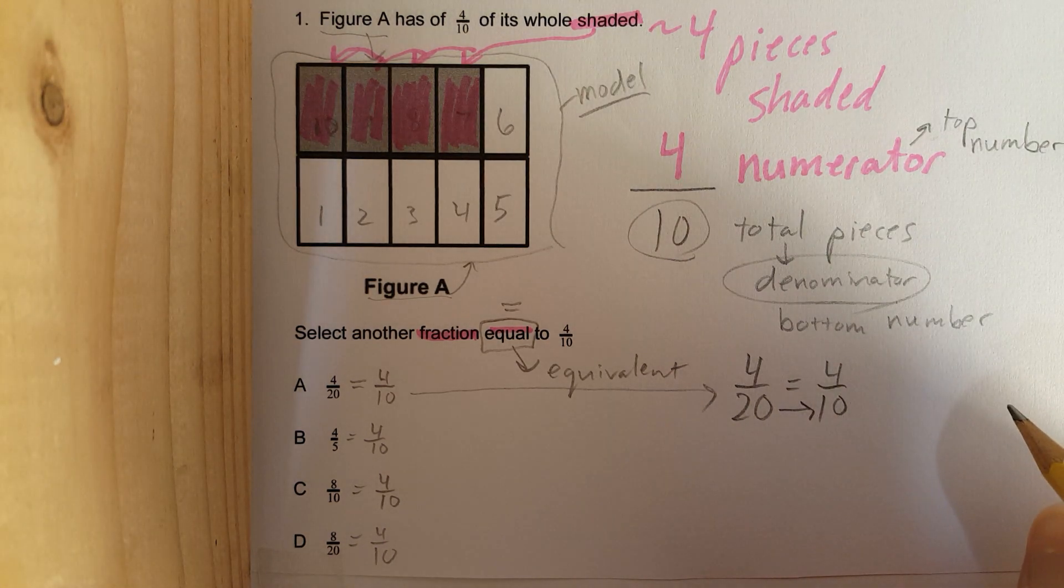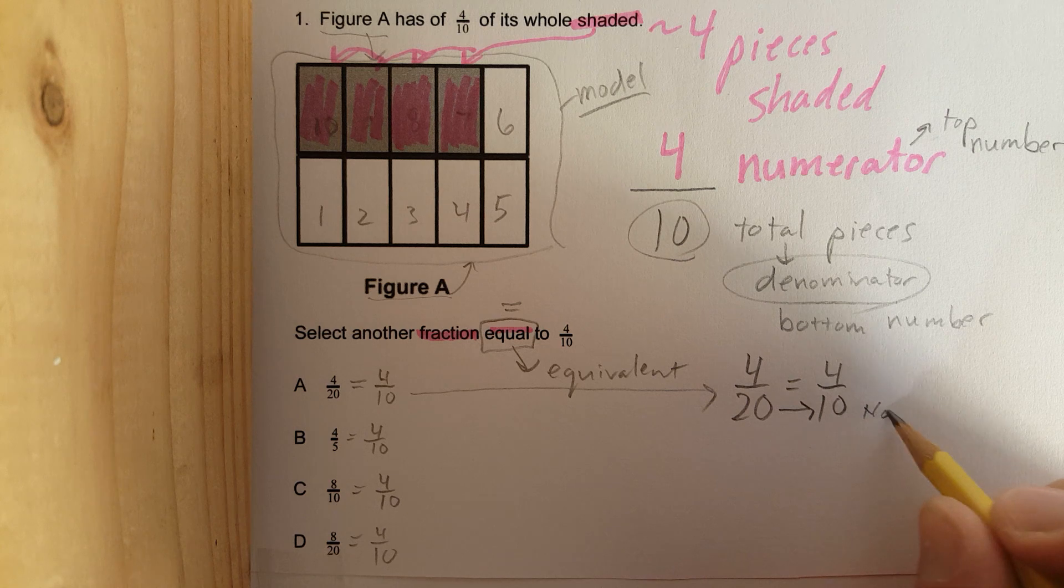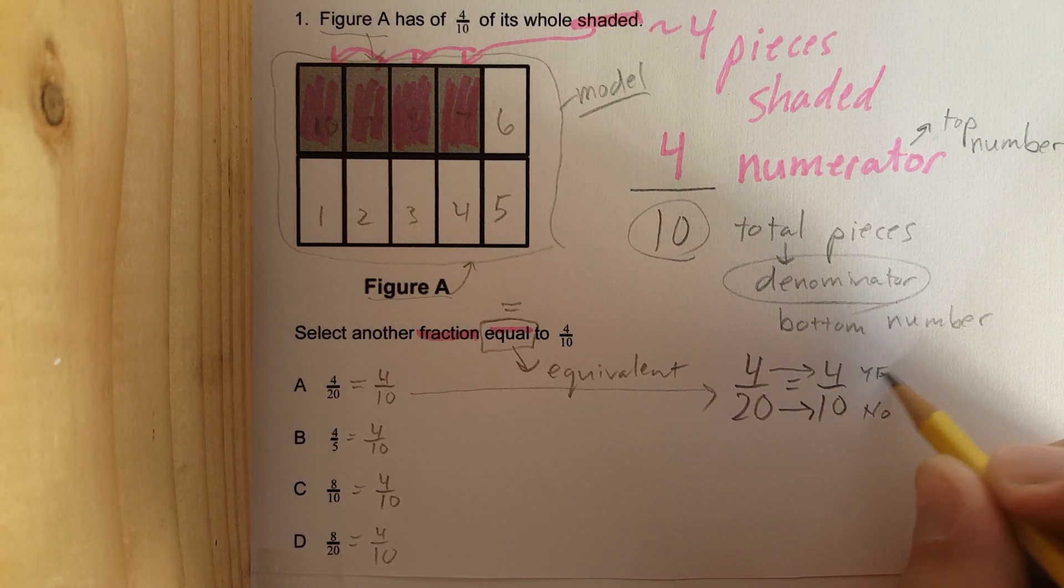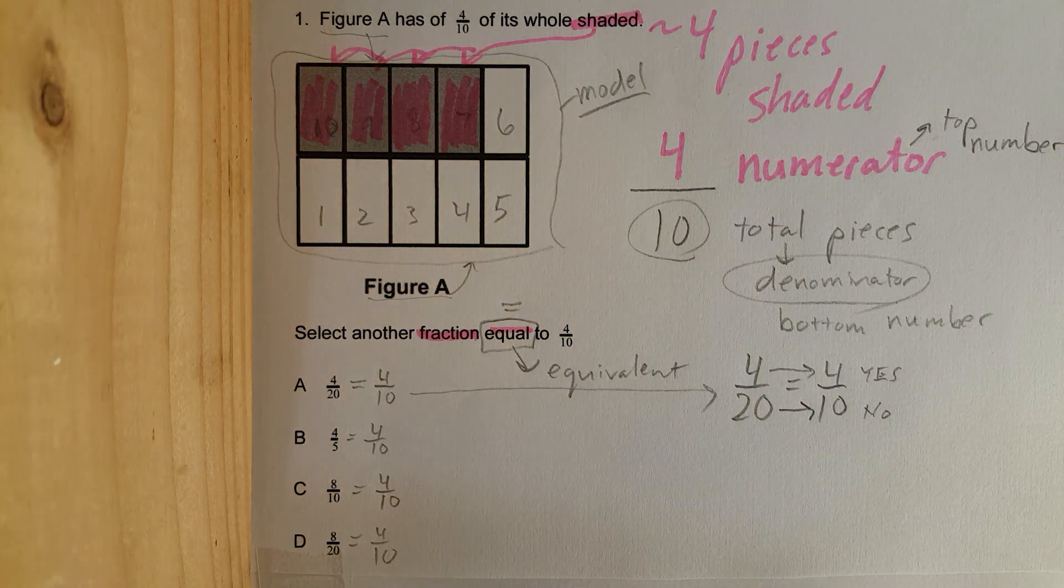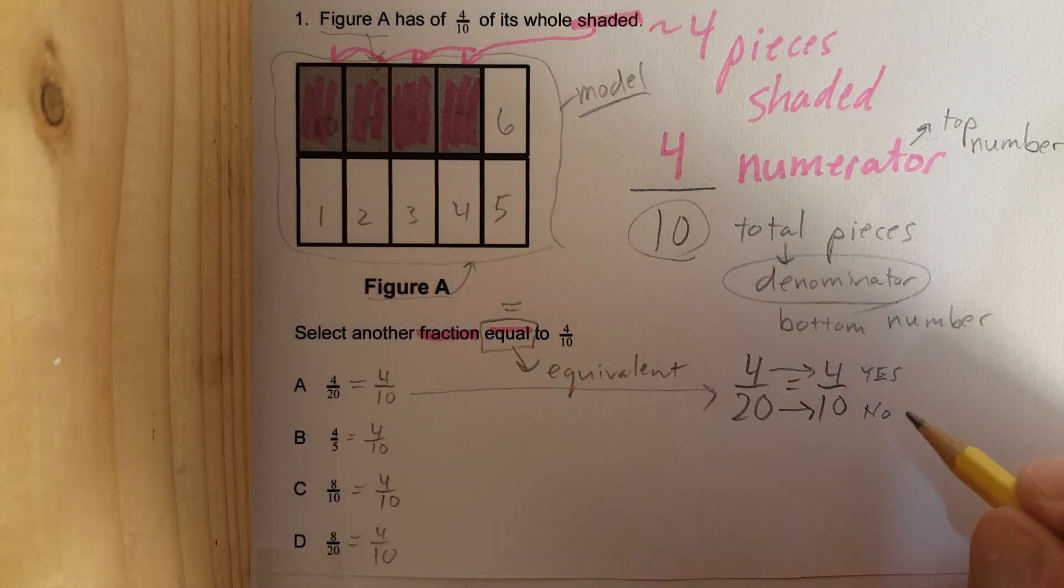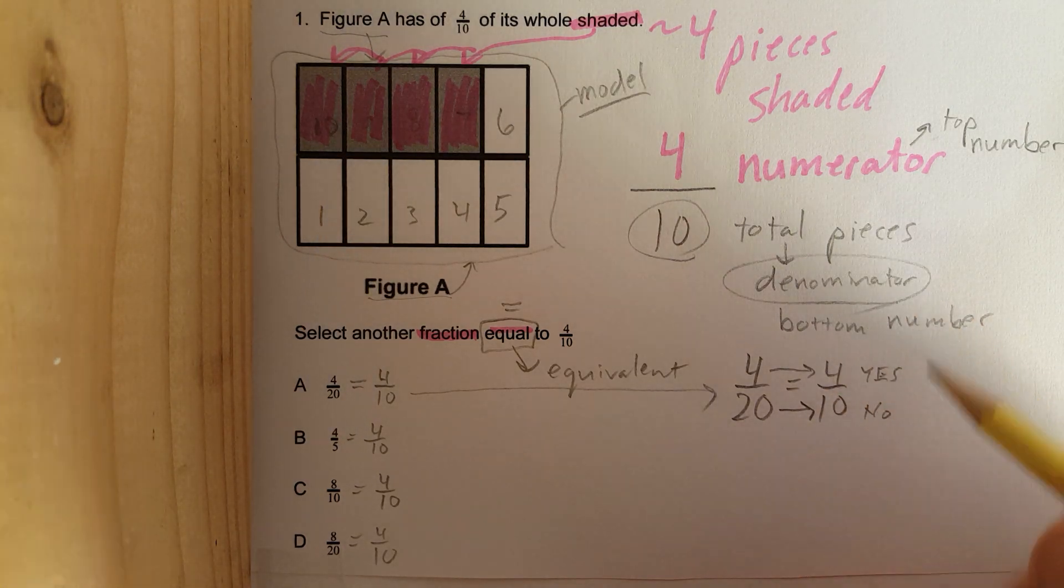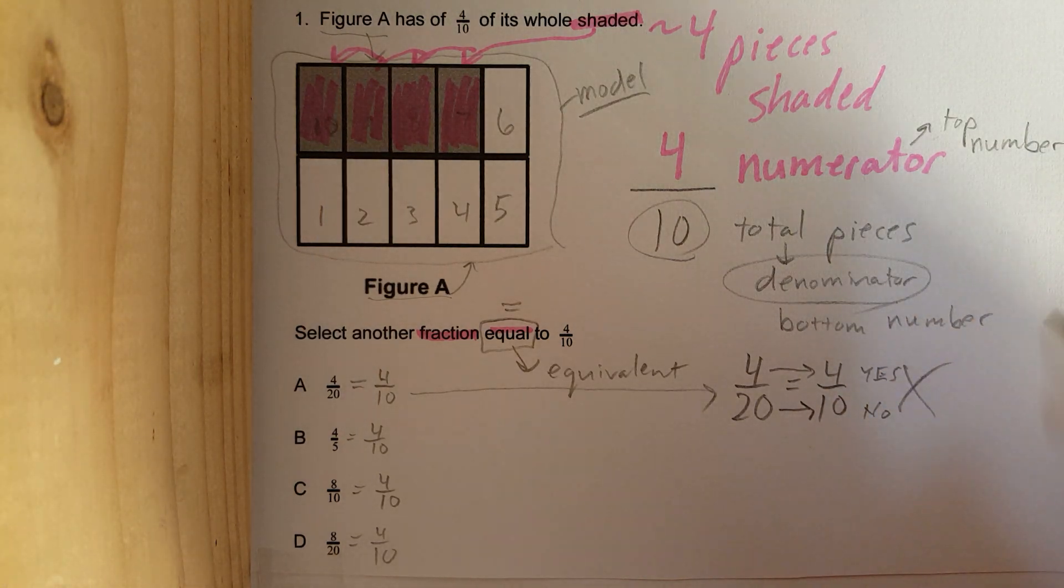Now, here's hopefully the easiest way to remember whether fractions are equivalent or equal. Are these two numbers the same? No. Are these two numbers the same? Yes. Are they equal? No. Because these are the same, but these are not. Okay? So, this one doesn't work. Wrong.